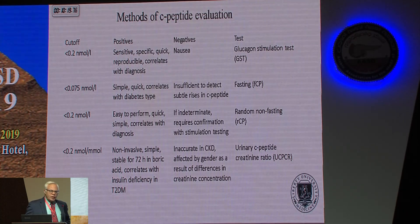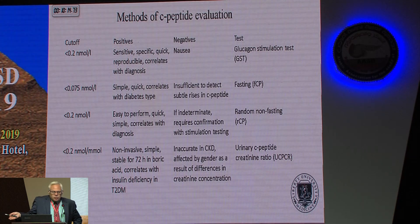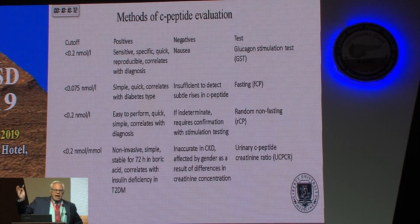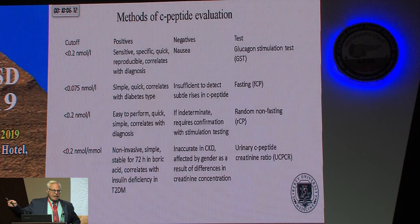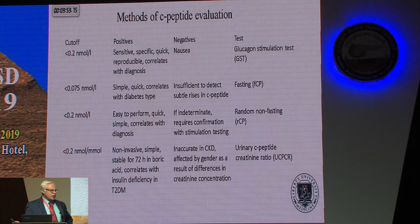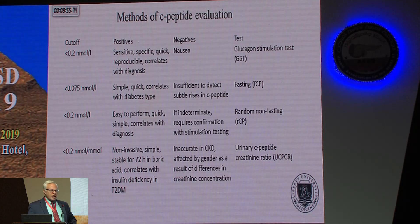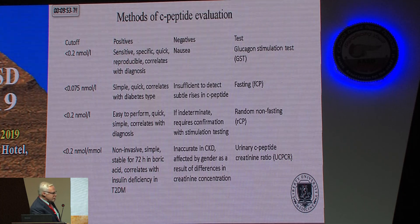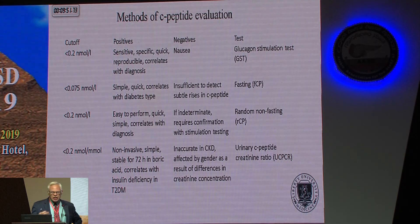Glucagon, even though it acts against insulin, also mobilizes glucose. So if you get it quickly, you get a glucose rise, which causes a little C-peptide release — but it's got to be done within minutes, because after that it suppresses insulin. Glucagon-stimulated C-peptide levels are probably the standard of care for a more specific test, though most people get a fasting or random one. We don't use urinary levels that much anymore; it's mostly serum levels.